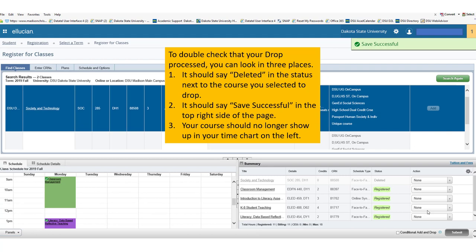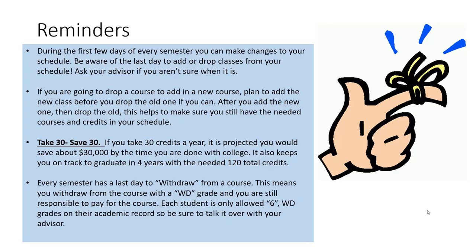To double-check that your drop processed, you can look in three places. One, it should say Deleted in the status next to the course that you selected to drop. Two, it should say Save Successful in the top right side of the page. And three, your course should no longer show up in your time chart on the left.